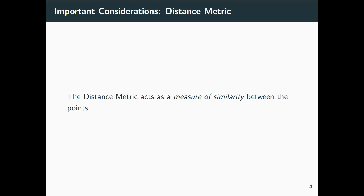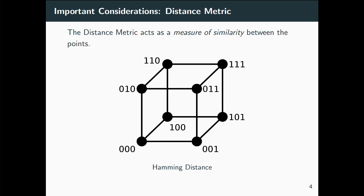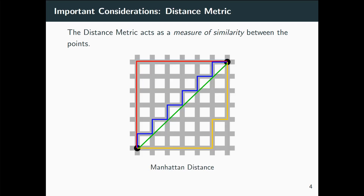Distance metrics tell us the measure of similarity, which is central to KNN. We generally use Euclidean distance, but other measures can apply depending on the problem — Hamming distance for certain types, or Manhattan distance, for example if you're considering chess moves where pieces can only move in particular directions.